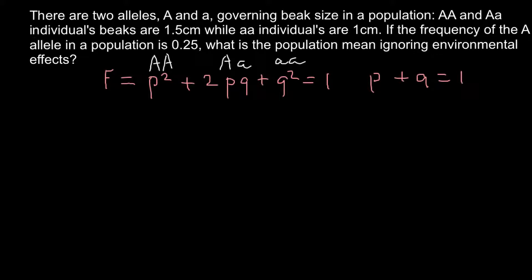Two alleles may form three genotypes. We have two types of alleles: one dominant and one recessive. So p stands for all the dominant alleles, capital A, and q stands for all the recessive alleles, small a. We know that the frequency of the dominant allele equals 0.25, so we can easily find q, the frequency of the recessive allele, which is 0.75. Adding these two numbers gives us 1.